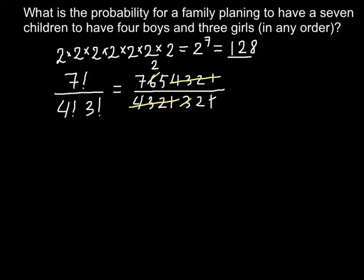Anything divided by 1 stays the same, so we can cross out the 1s. We can also cancel the 2 in the denominator with the 2 in the numerator. We're left with nothing in the denominator, and above the line we have 7 multiplied by 5, so the answer is 35.